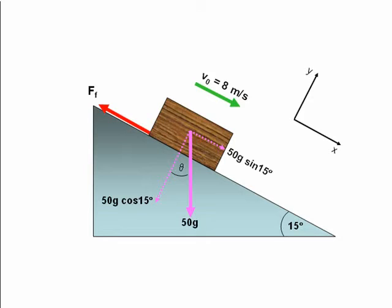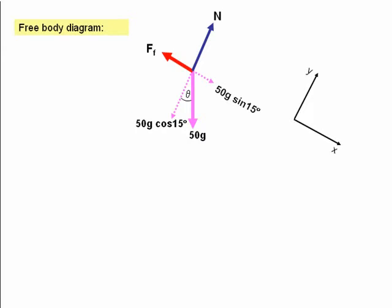So along the slope we have 50g sin 15 degrees and perpendicular to the slope we have 50g cos 15 degrees. We're now in a position where we can draw our free body diagram which is shown on the screen now where I've also included the normal reaction force N acting between the crate and the slope.